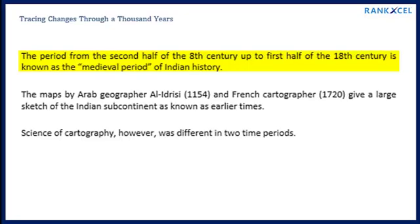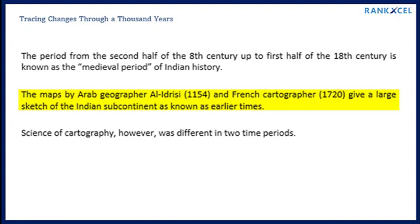The period from the second half of the 8th century up to the first half of the 18th century is known as the medieval period of Indian history. The maps by Arab geographer Al-Idrisi (c. 1154) and a French cartographer (1720) give a large sketch of the Indian subcontinent as known in earlier times. The science of cartography, however, was different in these two time periods.